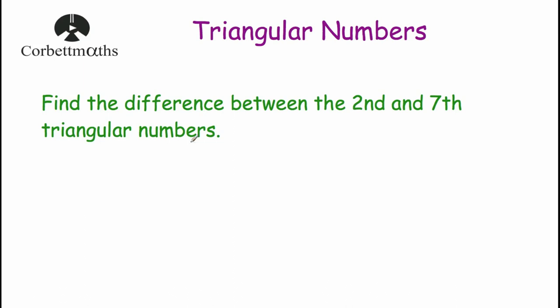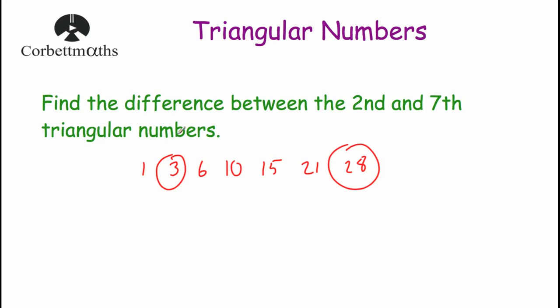So our first question says: find the difference between the second and seventh triangular numbers. So let's list our first seven triangular numbers. One, add two gives three; add three gives six; add four gives ten; add five gives fifteen; add six gives twenty-one; add seven gives twenty-eight. These are the first seven triangular numbers. We've been asked to work out the difference between the second and the seventh, so we'll take them away: twenty-eight take away three, which is equal to twenty-five. The difference between the second and seventh triangular numbers is twenty-five.